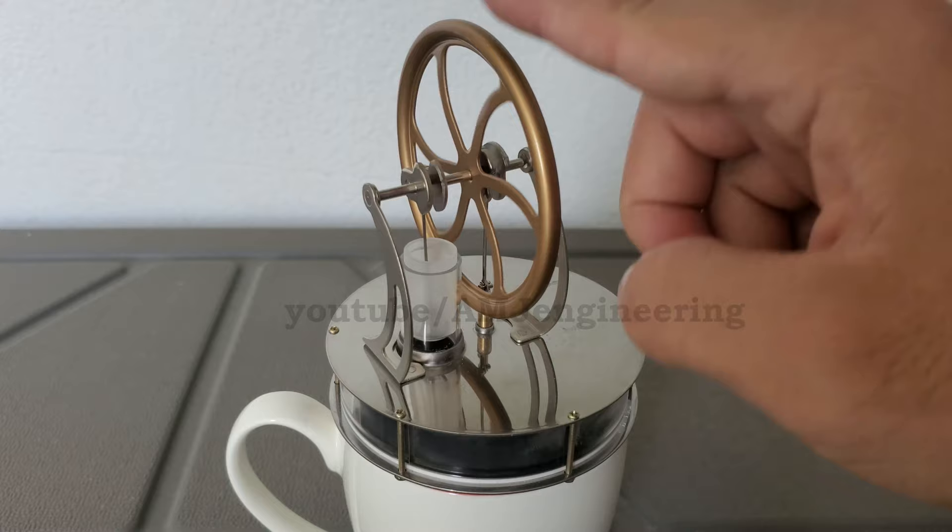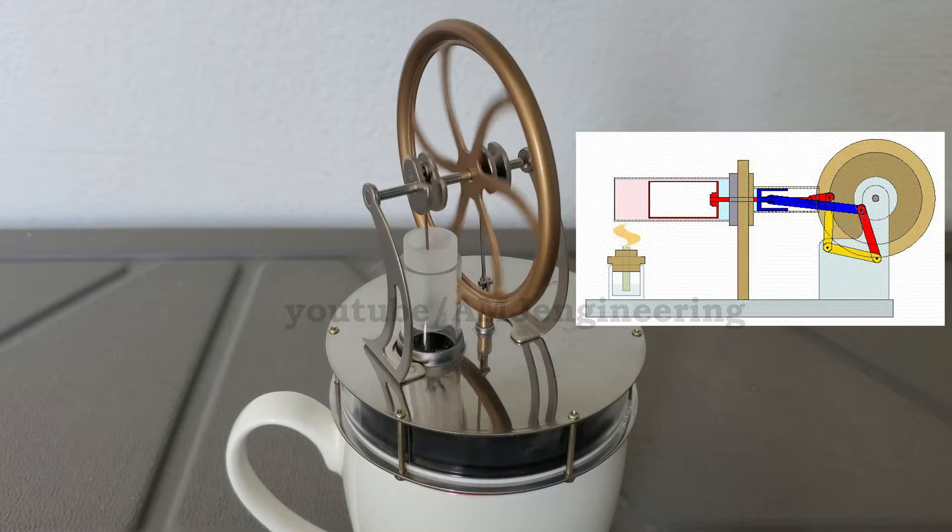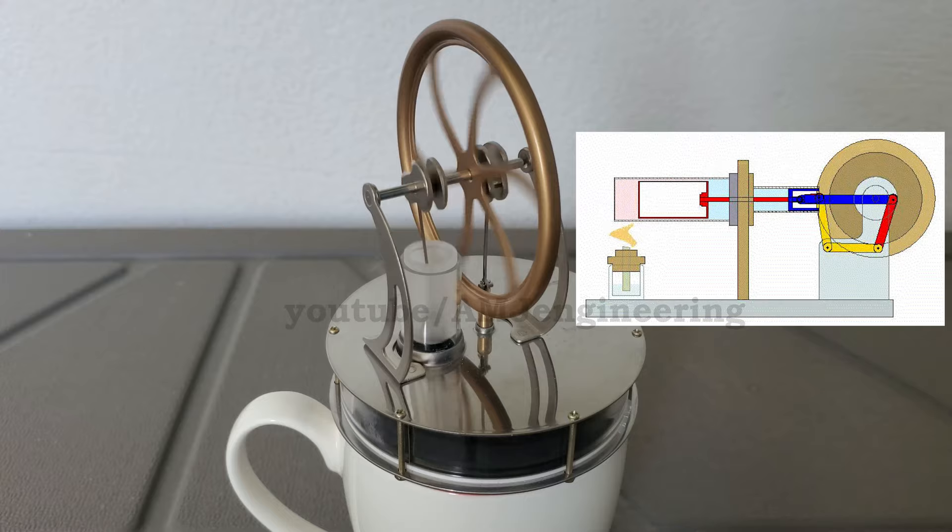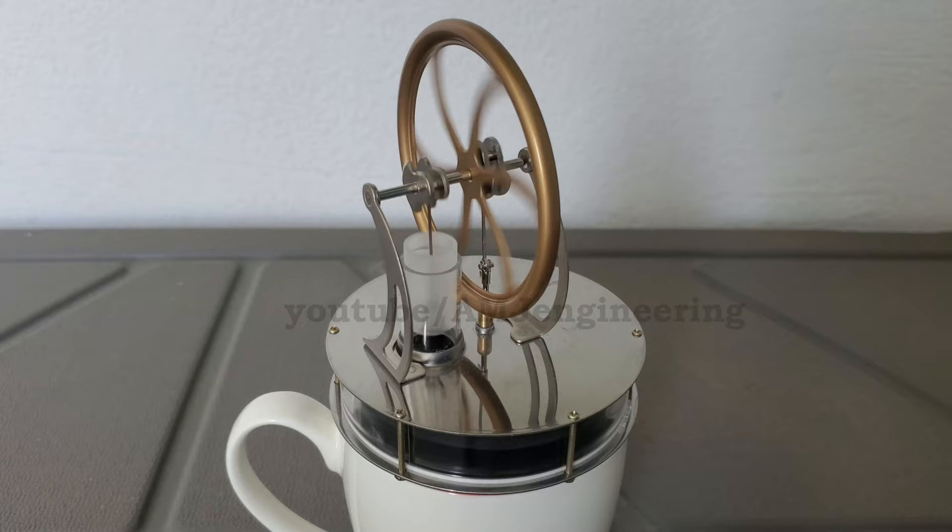Unlike the steam engine's use of water in both its liquid and gaseous phases as the working fluid, the Stirling engine encloses a fixed quantity of permanently gaseous fluid such as air. As in all heat engines, the general cycle consists of compressing cool gas, heating the gas, expanding the hot gas, and finally cooling the gas before repeating the cycle.